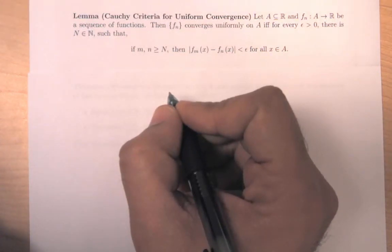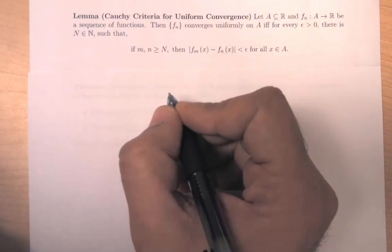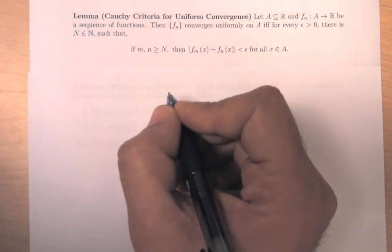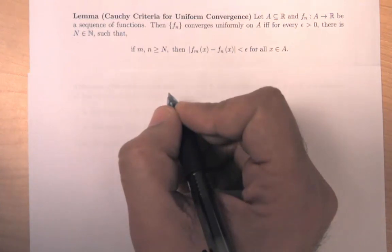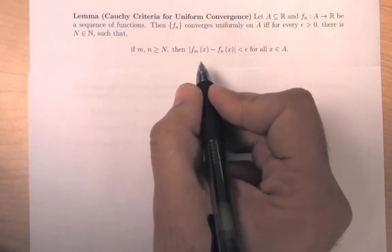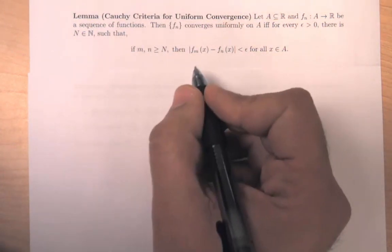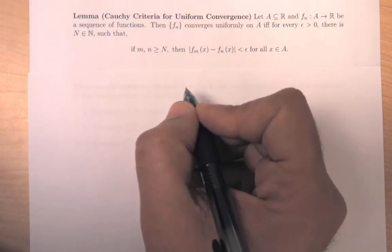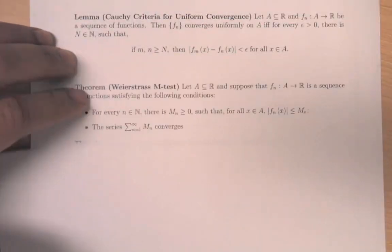Rather than describing convergence as getting arbitrarily close to a limit function, I can describe it as the sequence of functions getting arbitrarily close to each other. If we take the proof from real analysis one — that convergence of a sequence of numbers is equivalent to Cauchy convergence — and apply it to functions for all x, we actually get the proof of this. So we'll leave that as an exercise to the reader, but we will use it to prove our test for series convergence.